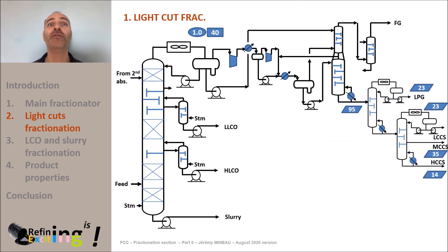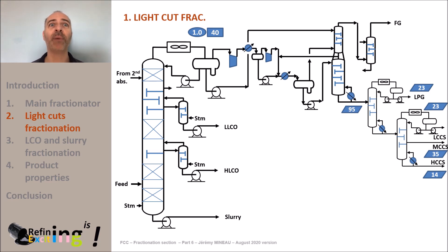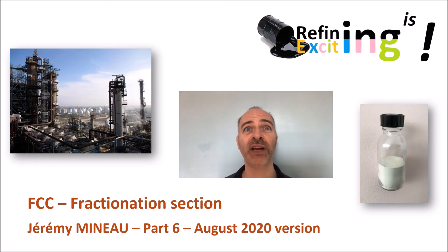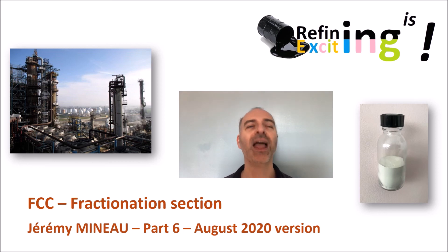And here we are at the end of the light cuts fractionation section. We have seen the interest of primary and secondary absorbers, as well as that of the stripper and the debutanizer. Let's move to the 7th part of this MOOC to talk about the heaviest cuts fractionation. In the meantime, do not forget to test your knowledge by answering the 5 questions of the quiz. You can also get a certificate if you ask for it, and I invite you to subscribe to my YouTube channel to keep informed about upcoming videos. See you very soon in the 7th part!